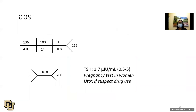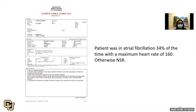Looking at the labs — pretty unremarkable. Worth noting: get a pregnancy test if the patient were a woman, since palpitations are a common presenting symptom. A urine tox screen is appropriate if you suspect drug use. His Holter report showed that 34% of the time the patient was in atrial fibrillation with a maximum heart rate of 160; otherwise normal sinus rhythm. Not a surprise.